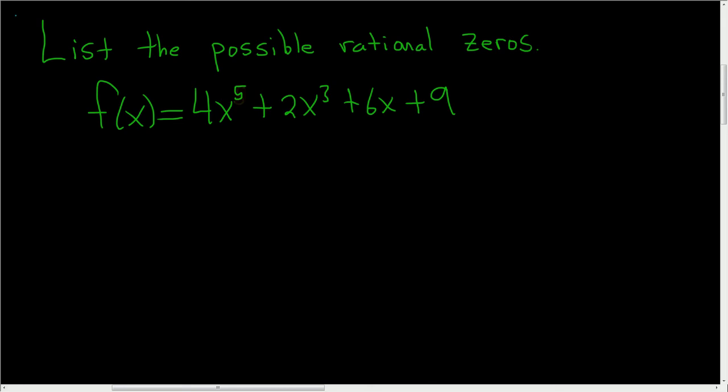List the possible rational zeros solution. First you start by looking at the factors of this number here. So factors of 9.